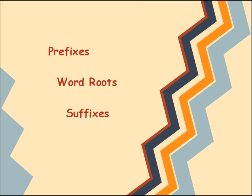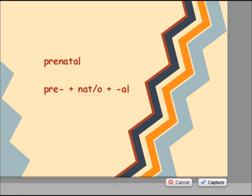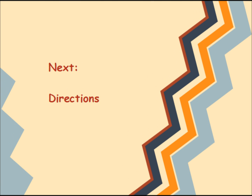To sum up, words in medical terminology are broken up into prefixes, word roots, and suffixes. Some words, like prenatal, have all three parts, but all words in medical terminology have at least one word root and one suffix. Please complete the exercises shown. If you feel confident with the exercises, move on to the next lesson, in which you'll learn how we talk about directions when talking about the human body.